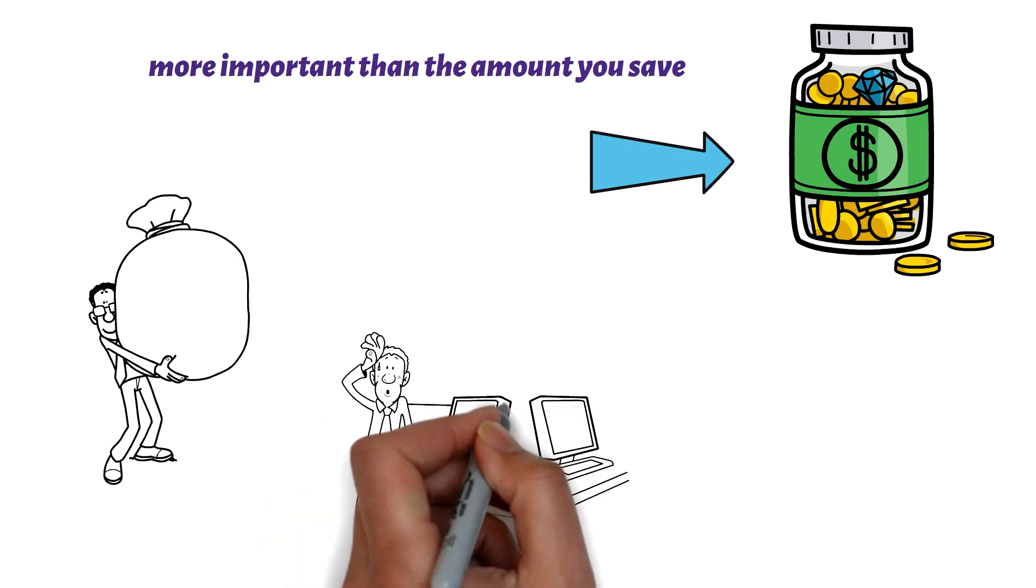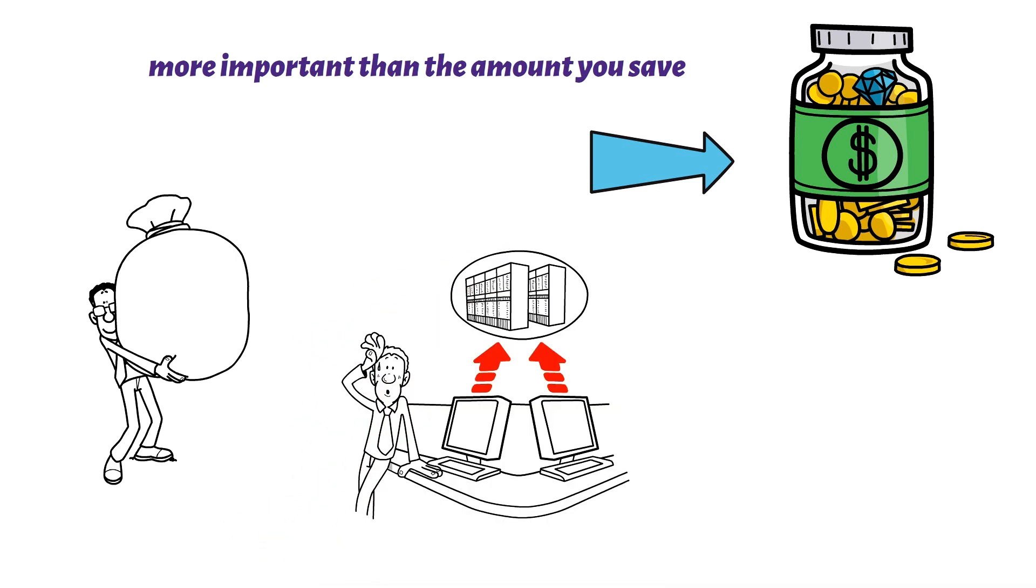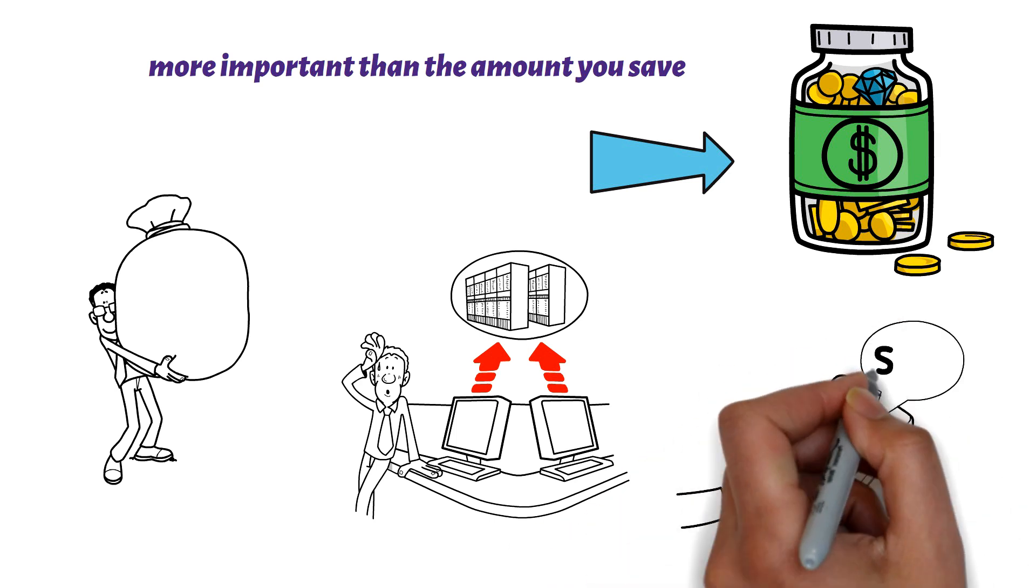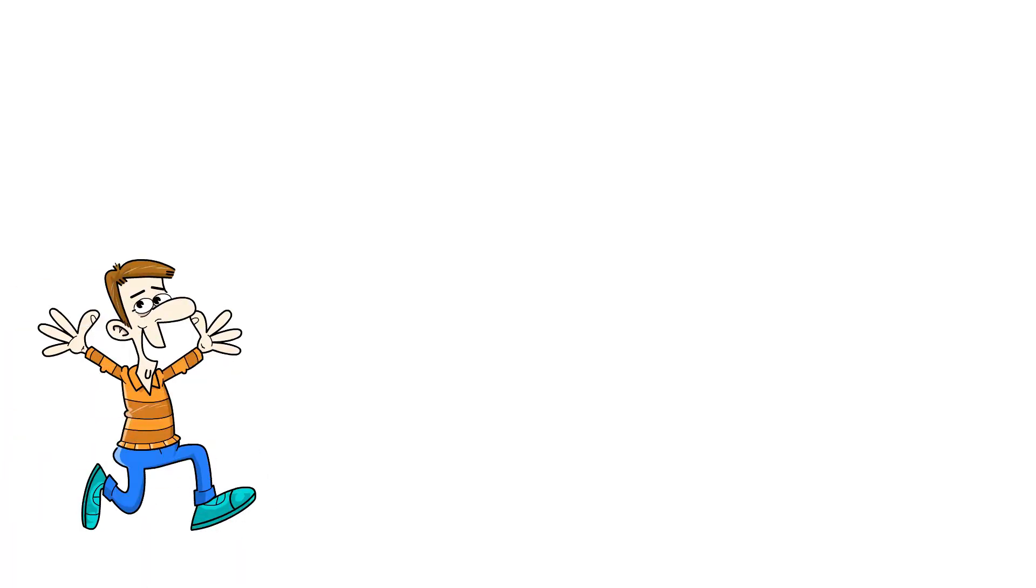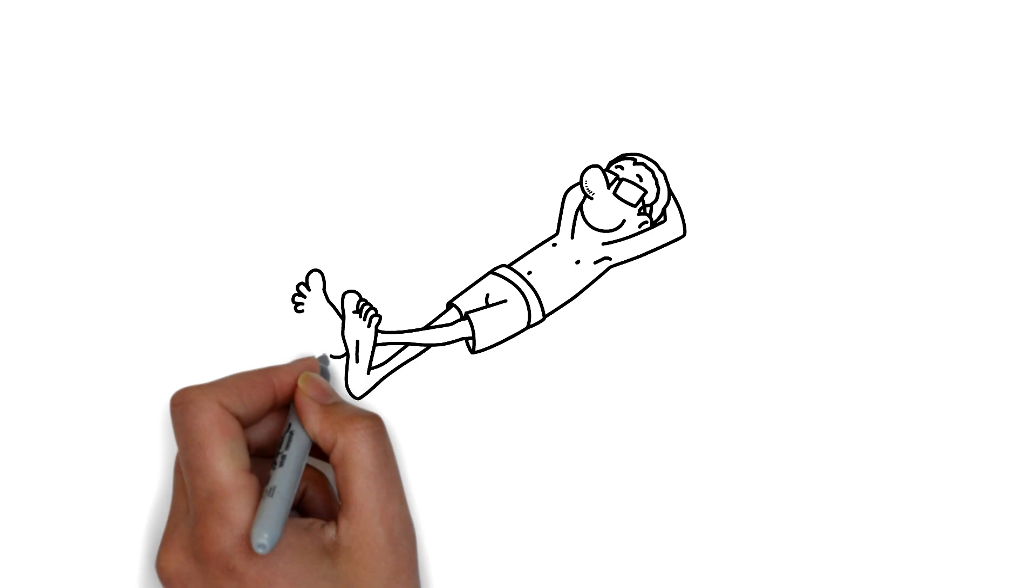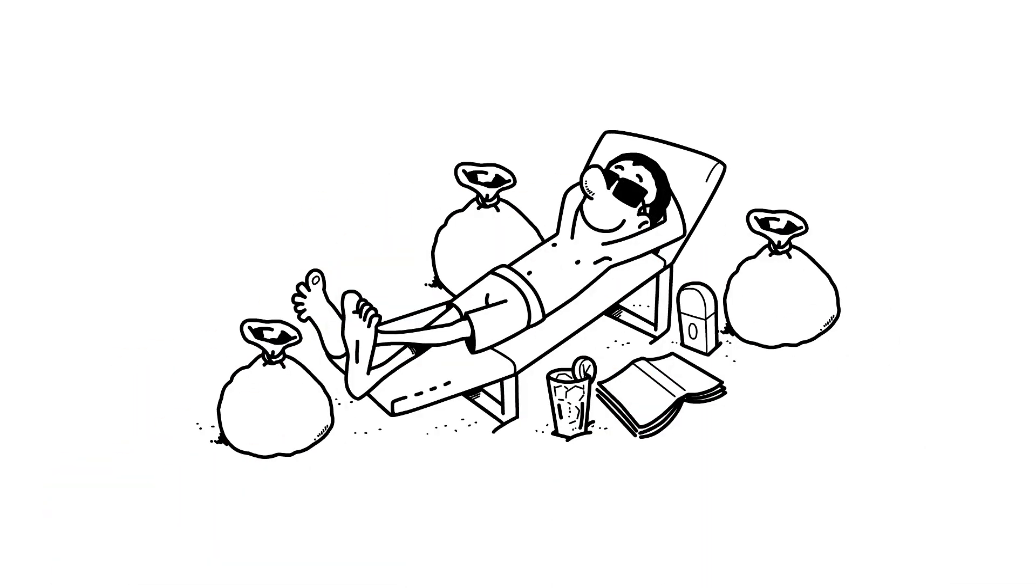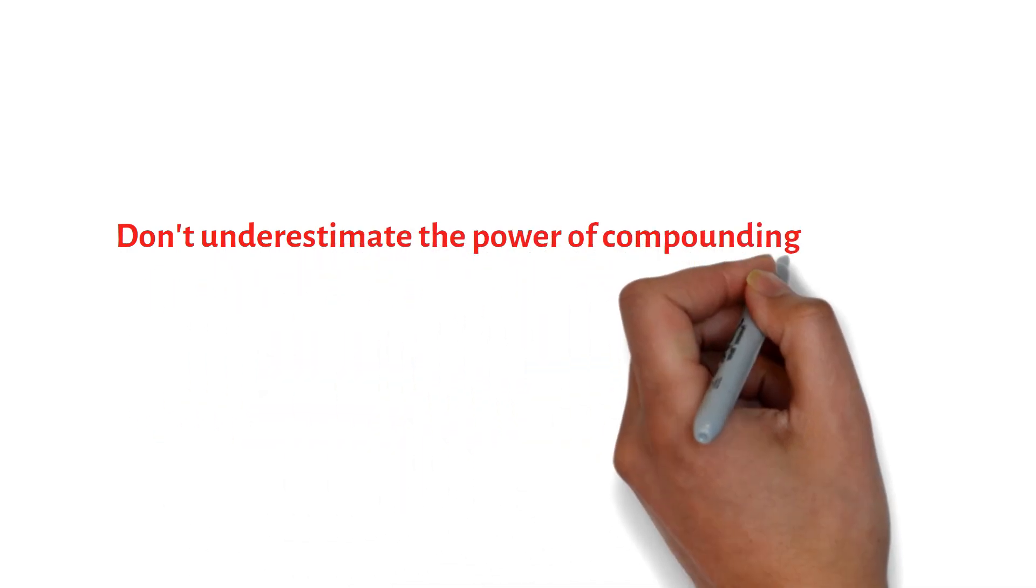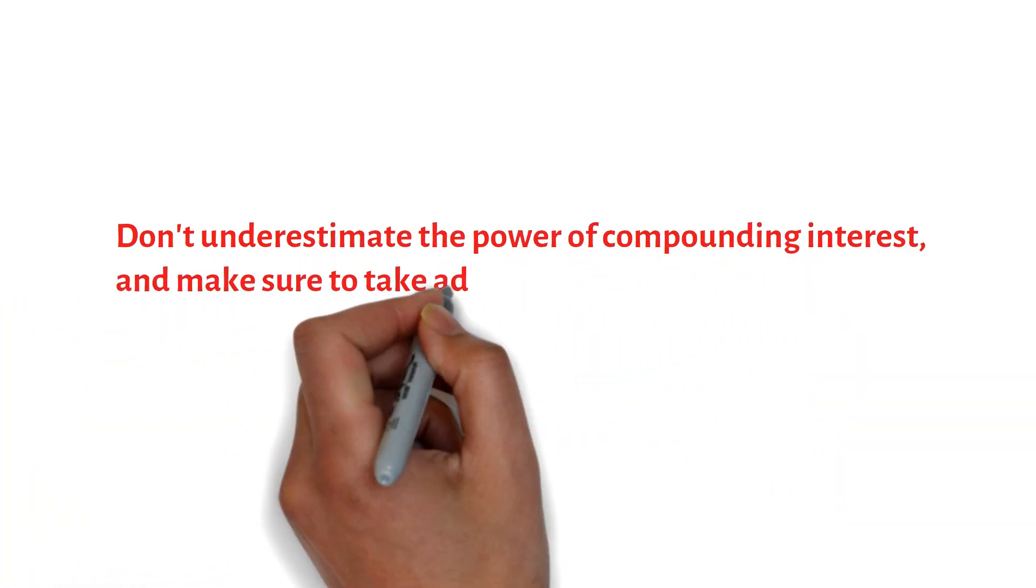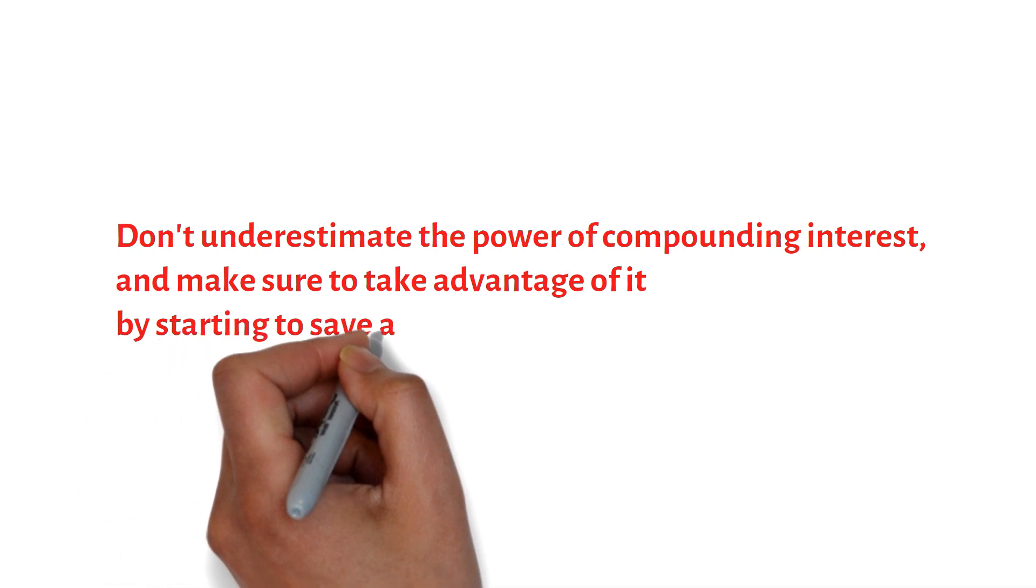One way to make saving easy is to set up automatic contributions to your retirement account. This way, the money is deducted from your paycheck before you even have a chance to spend it. And as your income increases over time, you can increase your savings rate accordingly. Remember, the earlier you start saving, the more time you have for your money to grow. Don't underestimate the power of compounding interest and make sure to take advantage of it by starting to save as early as possible.